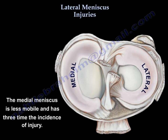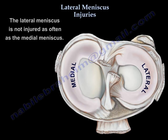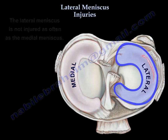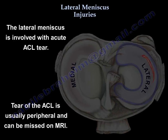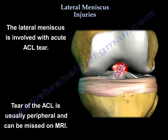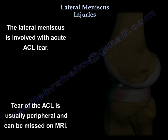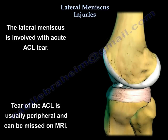The medial meniscus is less mobile and has three times the incidence of injury, so the lateral meniscus is not injured as much as the medial meniscus. The lateral meniscus is the one involved with an acute ACL tear. The tear is usually peripheral and can be missed on MRI.